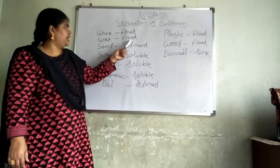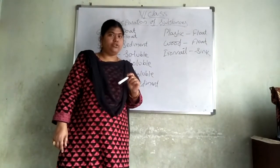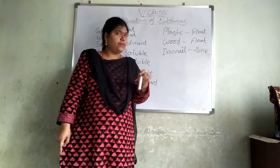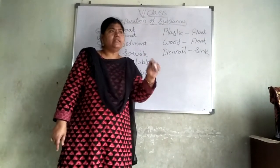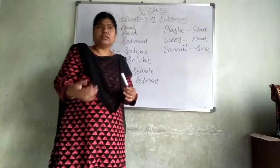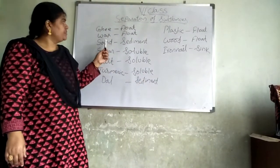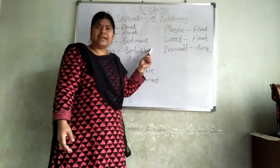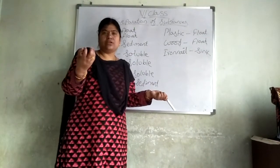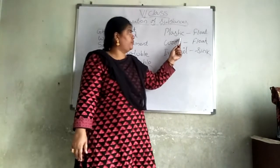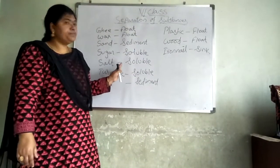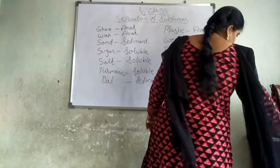Ghee and wax float in the water. Why? If the density of the water is greater than the substance placed in it, the substance will float. Ghee and wax have lower density than water, so they float. Sand is insoluble and sediments. Sugar and salt are soluble. Dal is solid and will not dissolve. Plastic and wood float; iron sinks.